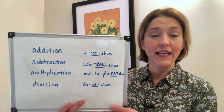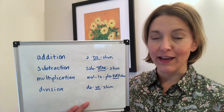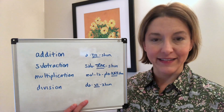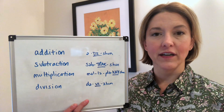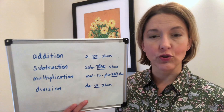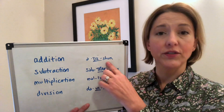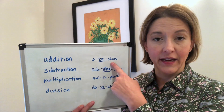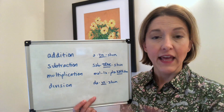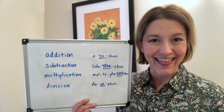Our lesson today is mostly about word stress, and we're going to think about two things. First, the schwa sound — that super short unstressed vowel sound we hear more in longer words. Second, we're going to talk about the -tion and -sion endings, where the rule is to stress the syllable right before that ending.